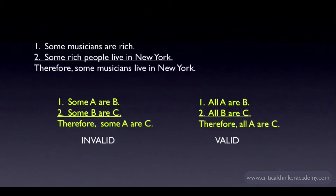Reasoning in a chain with 'all' is valid, but not with 'some.' This example may not strike everyone as obviously invalid, since in our world every claim in the argument is true. But when we're assessing validity, we're not allowed to assume background information that isn't stated in the premises. So in this hypothetical world, we know that at least one musician is rich, and we know that at least one rich person lives in New York. But from this alone, we can't validly infer that any musicians live in New York.